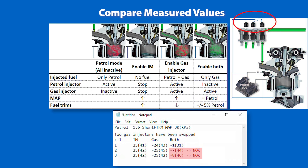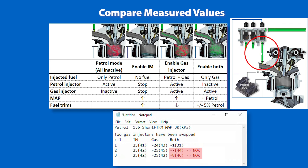Check if the connectors on the gas injectors correspond to the cylinders. Check if the gas hoses from the gas injector to the inlet manifold correspond to the cylinder. Also check for blocked or clogged gas hoses. Check if the interruption of the petrol injector corresponds to the installation manual.